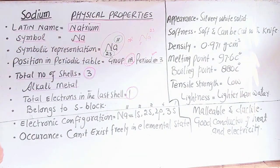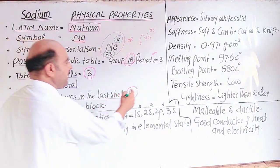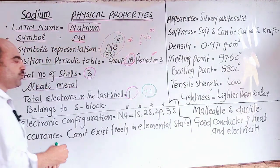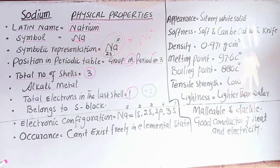When it loses one electron, it gets a plus one charge. This charge is the oxidation state. In sodium, the oxidation state is plus one.